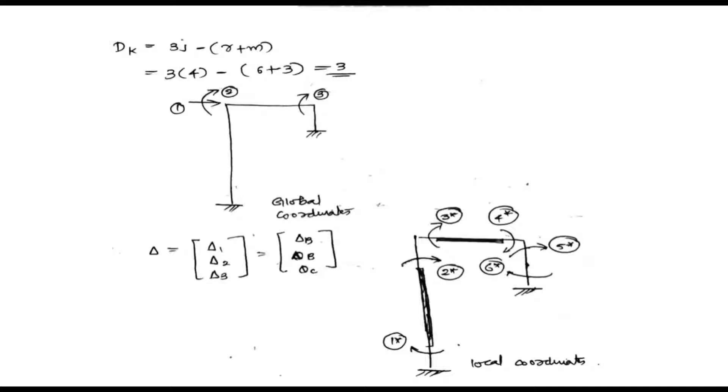As a first step, we need to find the degree of kinematic indeterminacy using the equation. Here we have 4 number of joints, 6 reactions and 3 members. So we'll get the value as 3.